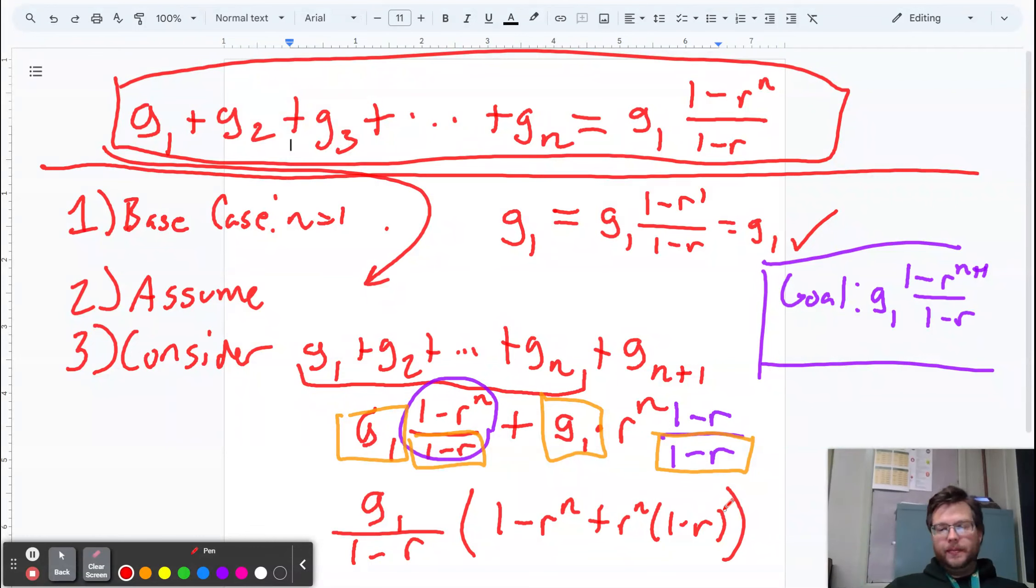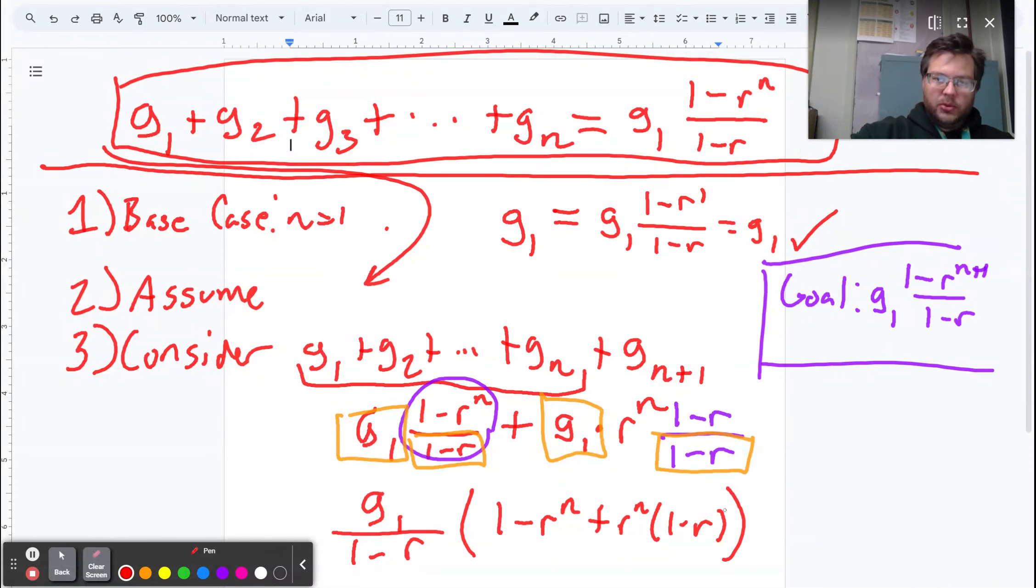And that's great. I'm going to move my face out of the way and we'll try to squeeze it in the corner here. I hope you can see how r to the n times 1 is r to the n. r to the n times r is r to the n plus 1. So here's what we have.